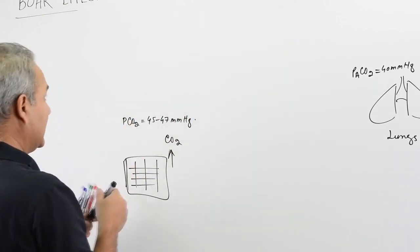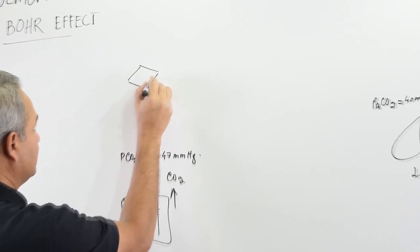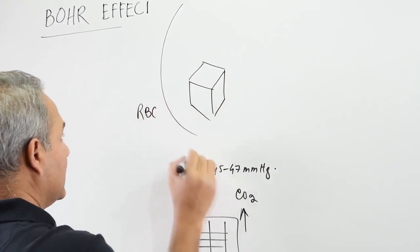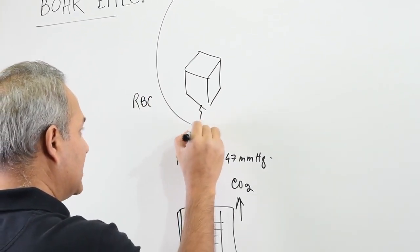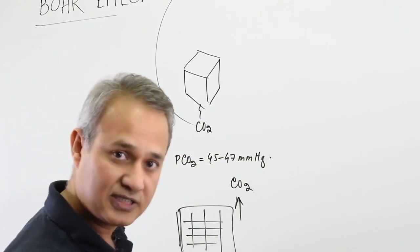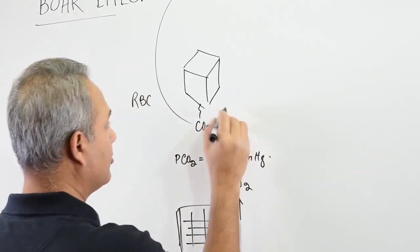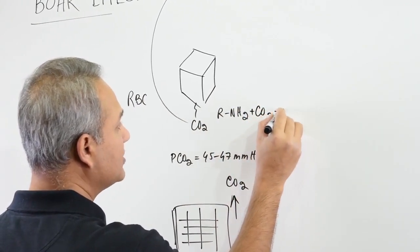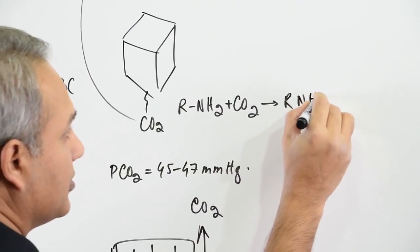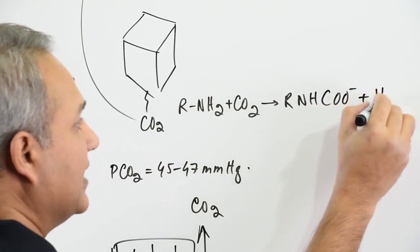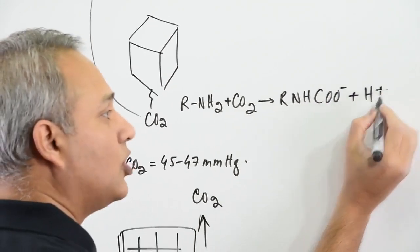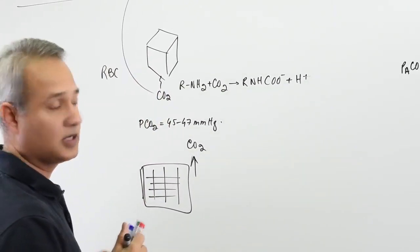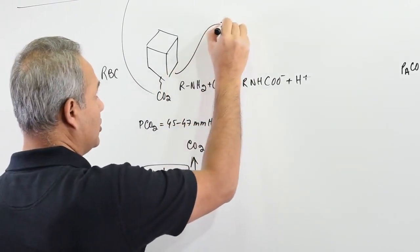When there is more carbon dioxide, let's look at a hemoglobin molecule inside the RBC. Carbon dioxide attaches with the hemoglobin. The formula is: RNH2 + CO2 gives RNHCOO⁻ + H⁺. So one proton is released when carbon dioxide associates with the hemoglobin. Keep this proton in mind.